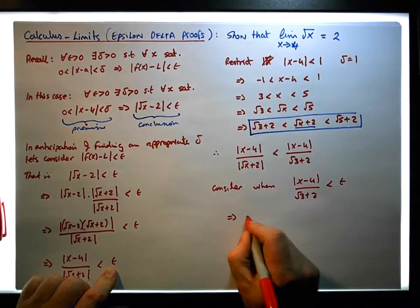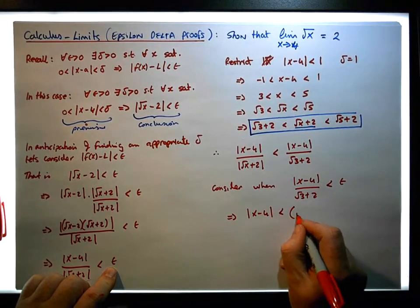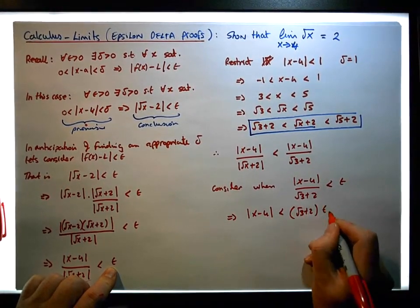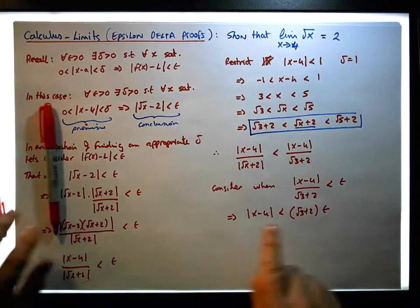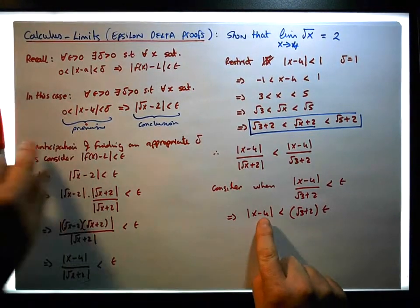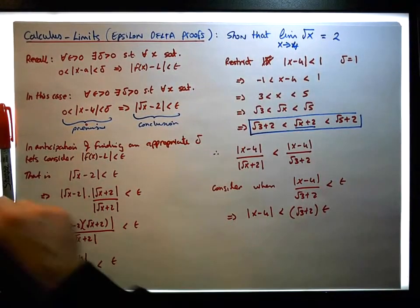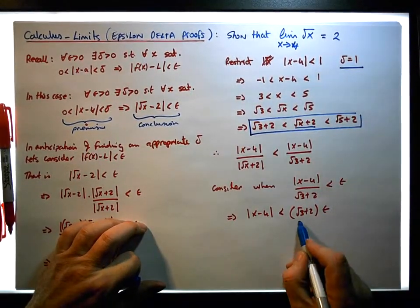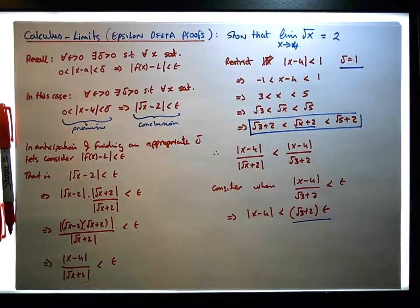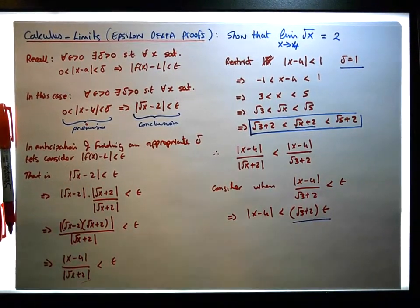This implies that x minus four must be less than the square root of three plus two times epsilon. So we've now found an appropriate delta in terms of epsilon. We now have two deltas: one delta under a restriction, and a new delta we could actually choose, because we know that x minus four is less than this specific value.